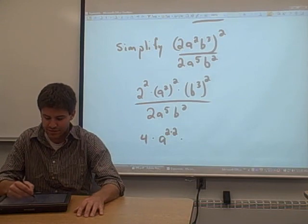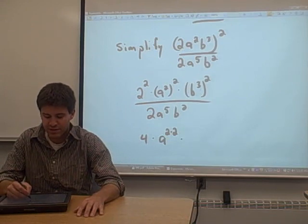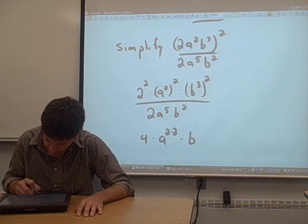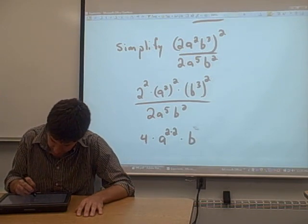Same property here. We have a term that already has an exponent on it, and it's raised to another exponent. What we do is multiply the two exponents, 3 times 2.